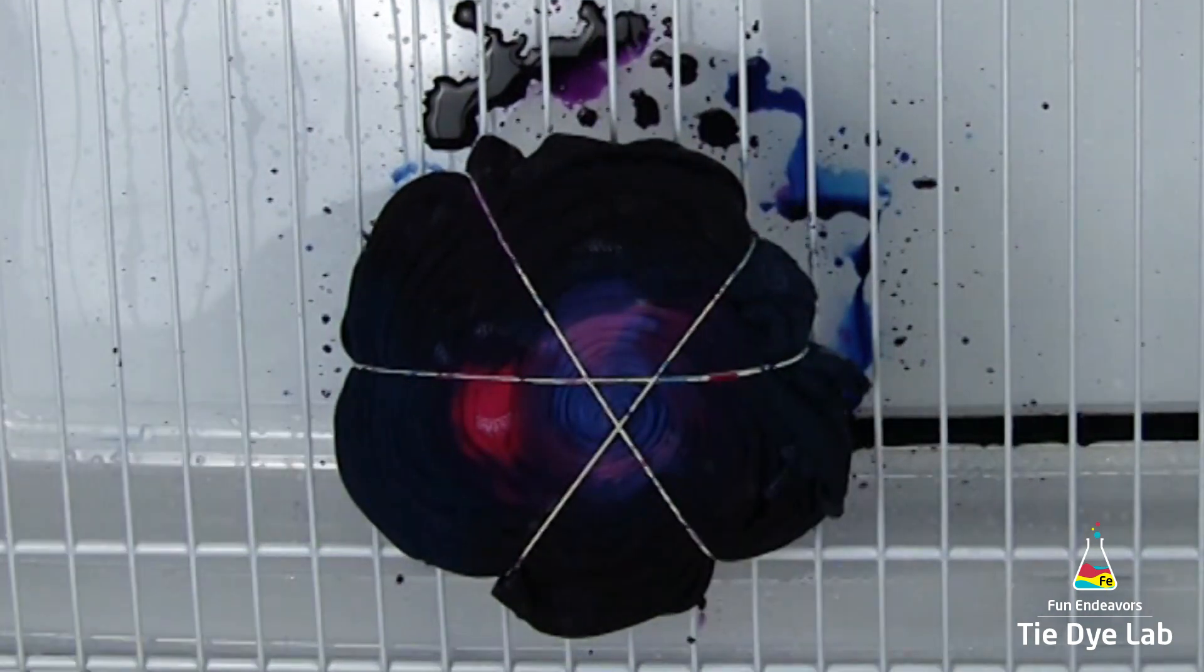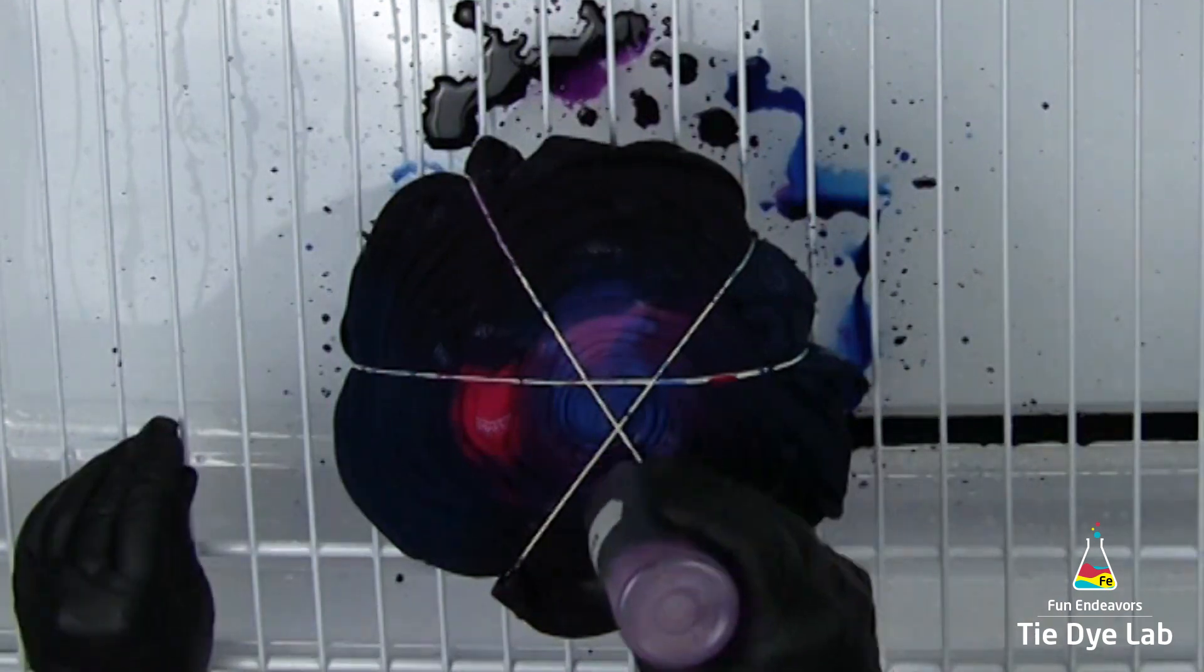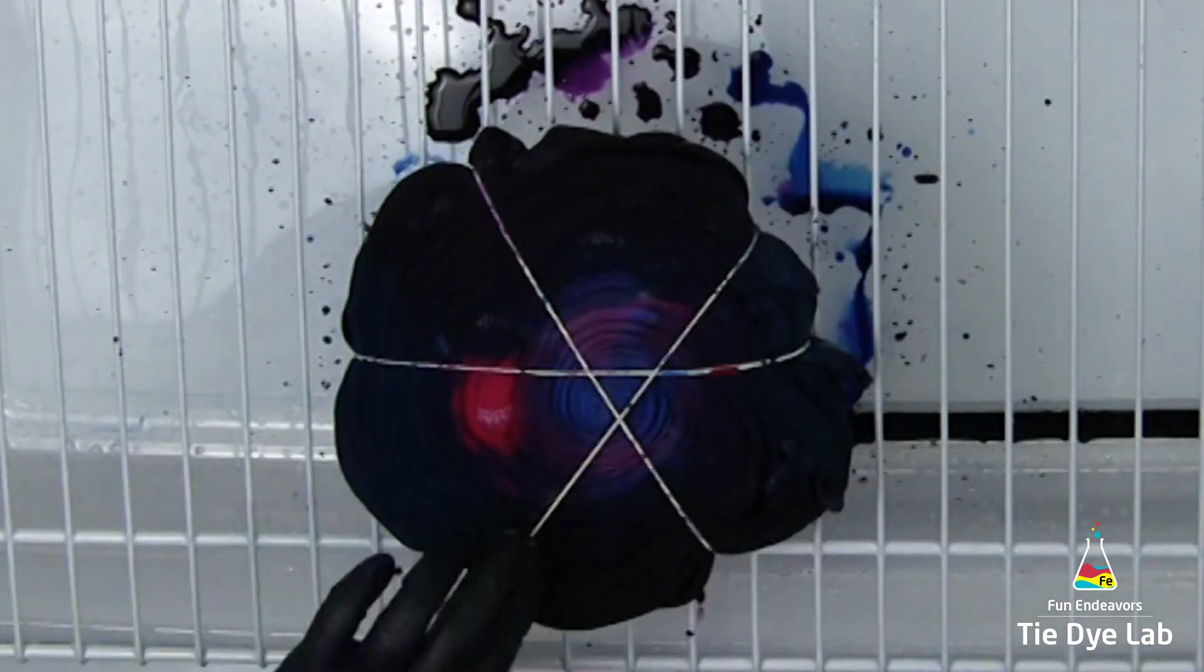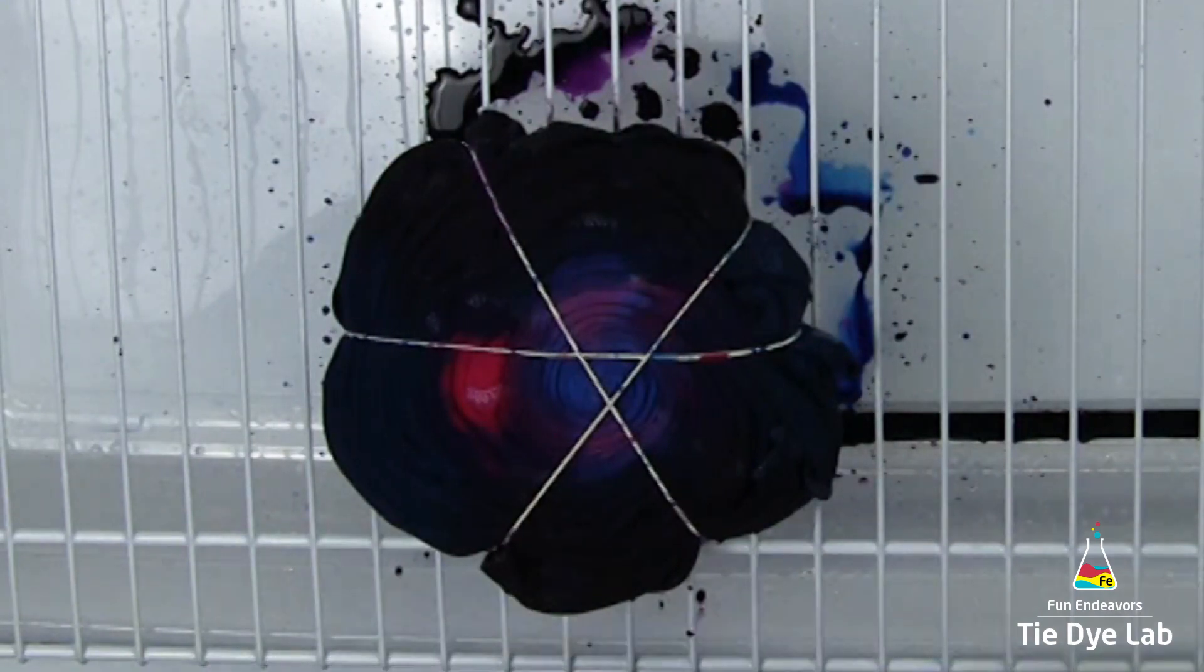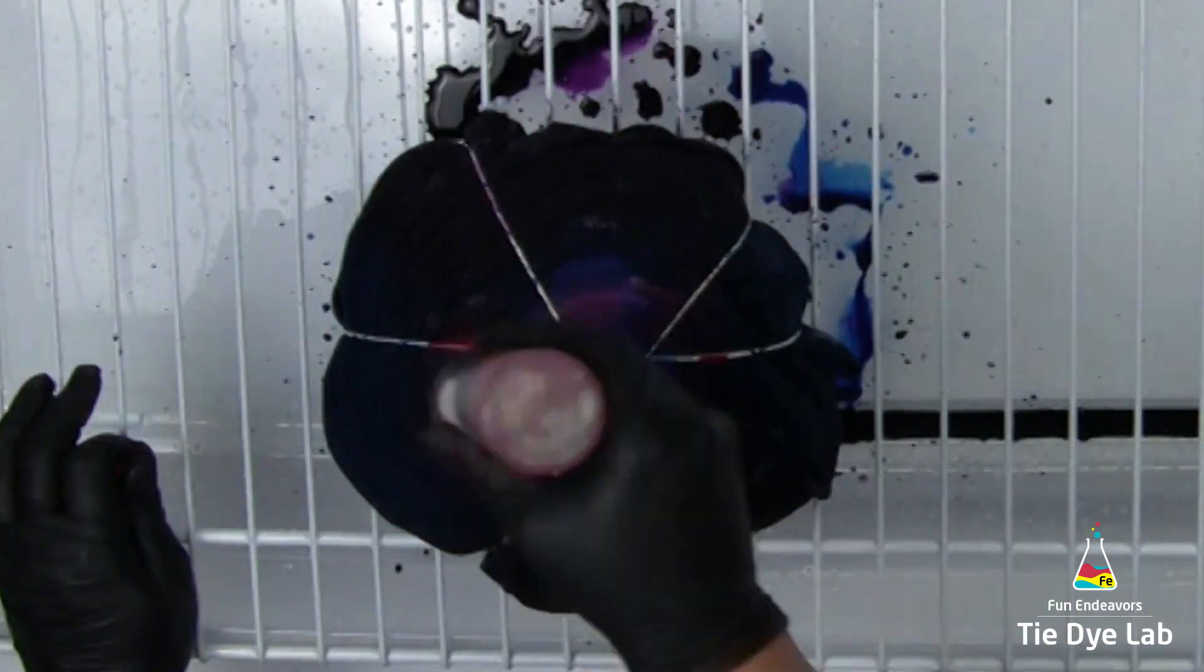Now that I have all of my dye in place, I'm going to go back and add more to each of the sections. I keep turning the shirt over to make sure I get good saturation. I want just a little bit of the colors coming through onto the other side.